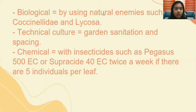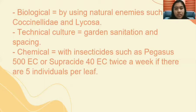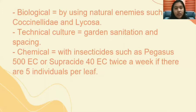The way to control Aphis pomi biologically is by using natural enemies such as Coccinella and Chrysopa. For technical culture, we can use garden sanitation and spacing. For chemical control, we can use insecticides such as Pegasus 500 EC or Suplacide EC twice a week if there are five individuals per leaf.